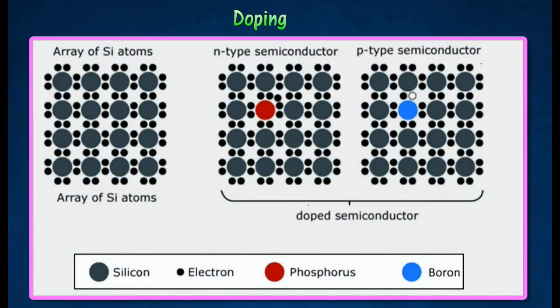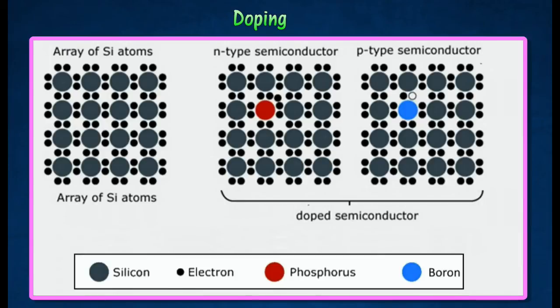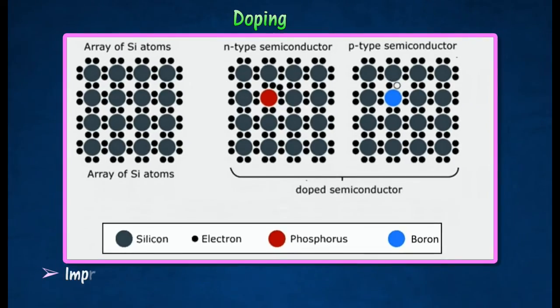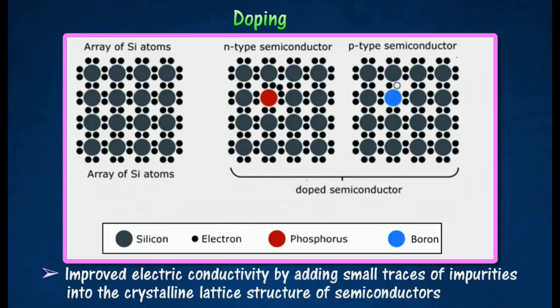In semiconductor production, doping intentionally introduces impurities into an extremely pure semiconductor for the purpose of modulating its electrical properties. The electrical conductivity of a semiconductor can be improved by adding small traces of impurities.